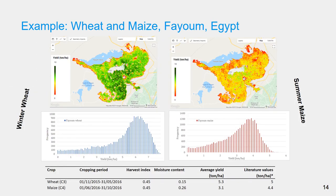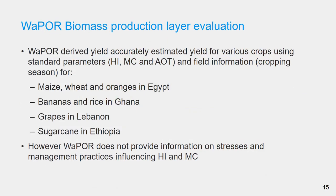Further analysis in Egypt showed similar results. Here the results of two crops grown in two different seasons are shown: winter wheat and maize. The values are very similar to the values obtained from literature. For the summer maize, there are areas with very low yields which are likely fallow areas, so the mean value is closer to the literature value. The evaluation of the biomass production layer shows that by using standard conversion factors, WAPOR is able to simulate yield accurately in various climates and for various crops. Because the parameters are defined from literature, it is not possible to provide information on how stresses and management practices, which influence harvest index and moisture content, affect yield.